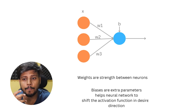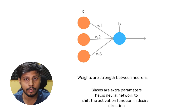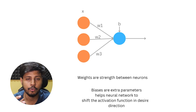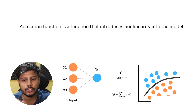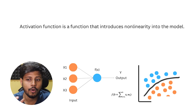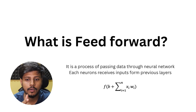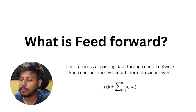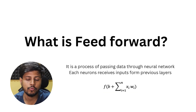Additionally, we also have biases. Bias is an extra parameter that helps the network make predictions more accurately, allowing the network to shift the activation function's output in the desired direction. The activation function introduces non-linearity to the neural network and decides whether a neuron should be activated or not. Feedforward is the process of passing data through the network, where each neuron receives input from the previous layer, multiplies it by weights, applies biases, and passes the result through an activation function.